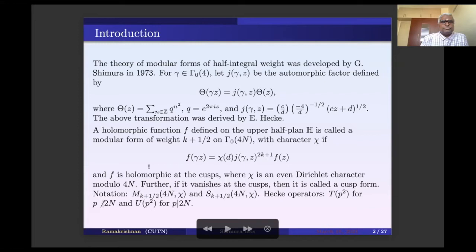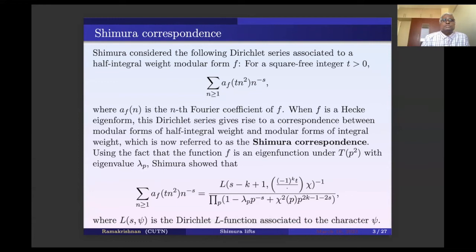If the function vanishes at the cusps, it is called a cusp form. The notation for the space of modular forms is M_{k+1/2}(4n, chi), where the weight is k+1/2. The cusp form space is S_{k+1/2}(4n, chi), where n is the level and chi is the character. The analogous Hecke theory was developed by Shimura in the same 1973 work. The operators are generated by T_{p^2} for p not dividing the level 2n, and the U operator for p dividing n.